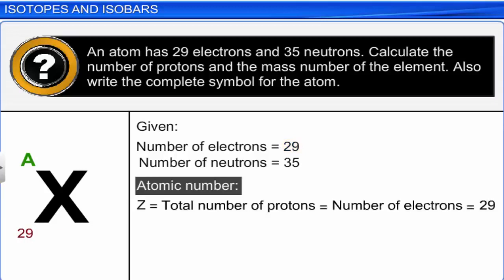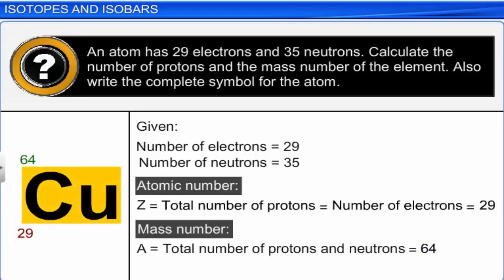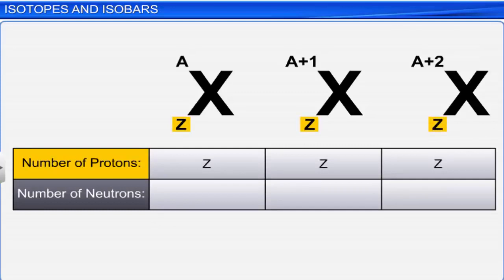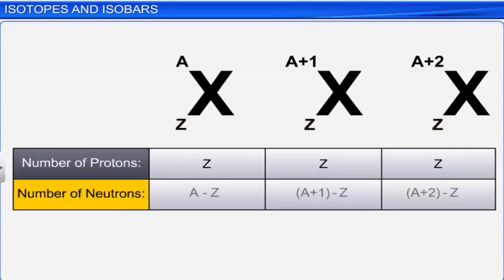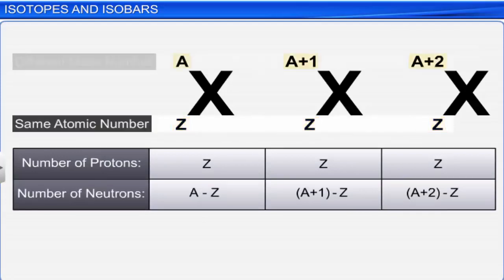We know that mass number A equals the sum of the number of protons and neutrons. Hence, the mass number of the given element is 29 + 35 = 64. Since the atomic number is 29, the atom is copper. In some cases, atoms of the same element may have the same number of protons (i.e., the same atomic number) but different numbers of neutrons — in other words, same atomic number but different mass numbers. Such atoms are called isotopes.